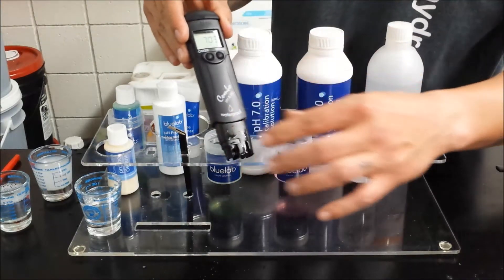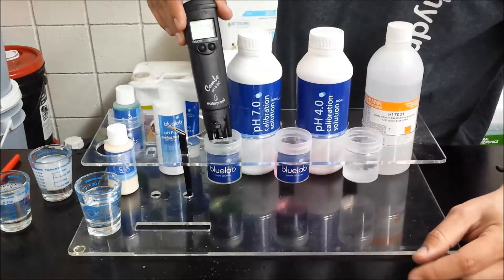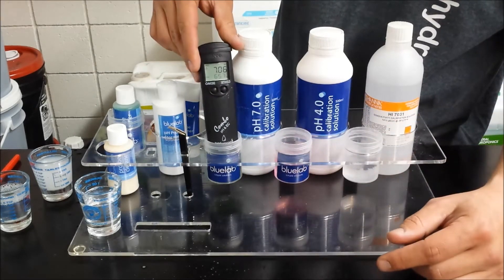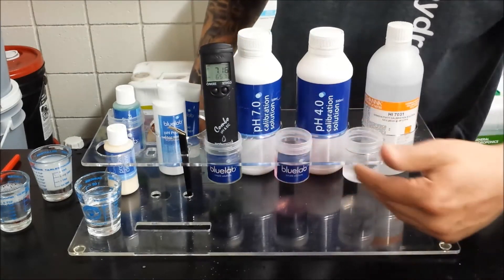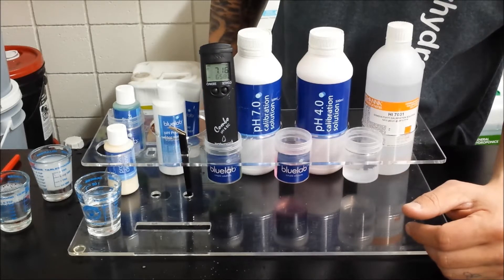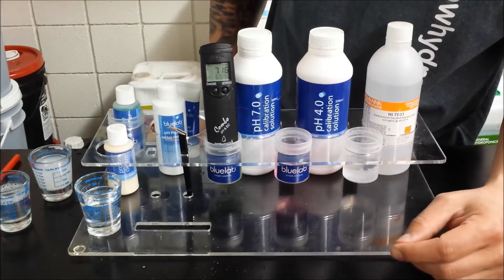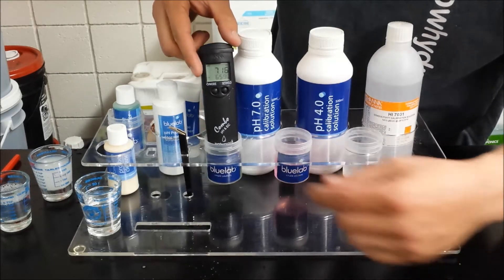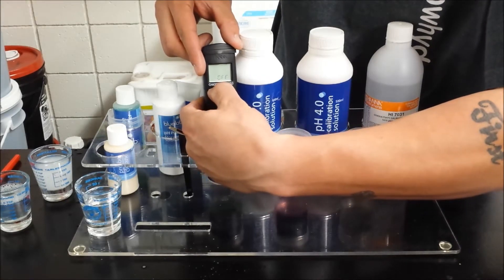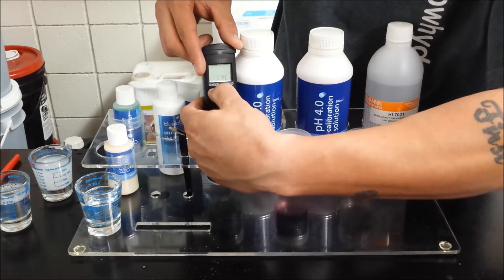Now you're ready for calibration. So from pH mode, we're going to put it in our 7.0 here. You always want to use fresh calibration solution. Once it settles on a reading, you're going to hold down the mode button until it says Cal.